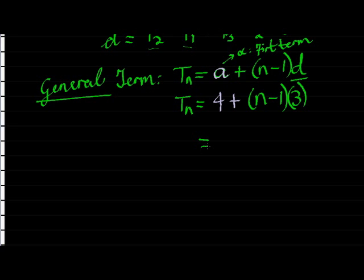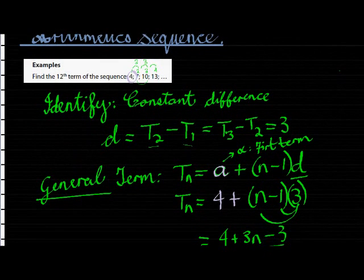It's not necessary unless they ask you to simplify. And then we'll just distribute this three. So we get four plus three n minus three, or four minus three is one plus three n. Here we go. That is the general term for this question.